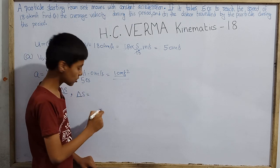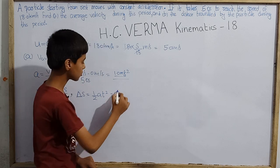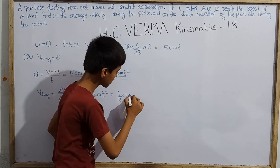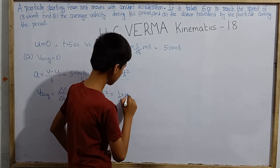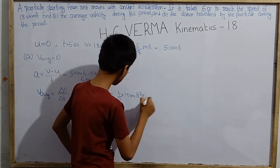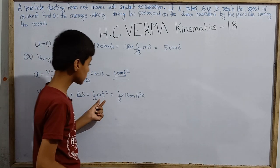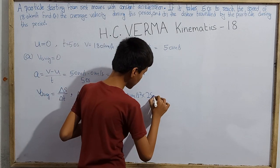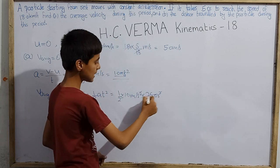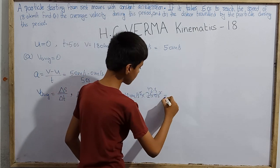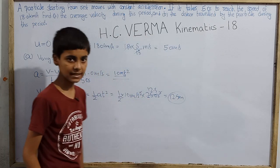u is 0, so u t is 0. Half a t square, so this is half into acceleration 1.0 meter per second square into time 5.0 seconds, so t square is 25.0 second square. This is cancelled. This is 12.5. So finally we get 12.5 meters as the total displacement.